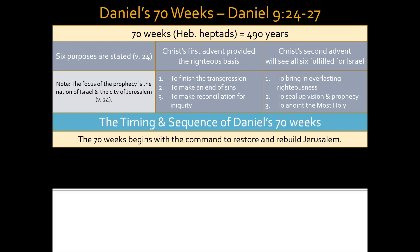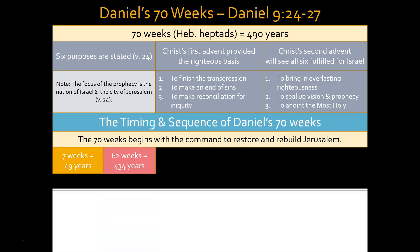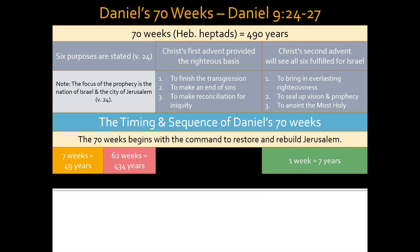We believe the 70 weeks begins with a command to restore and rebuild Jerusalem. Verse 25 says: 'Know therefore and understand that from the going forth of the command to restore and build Jerusalem until Messiah the Prince, there shall be seven weeks and 62 weeks; the street shall be built again, and the wall, even in troublesome times.' The first period is seven weeks, or 49 years, then a period of 62 weeks, or 434 years. There is then a gap, and we believe there is still outstanding one week — Daniel's 70th week — a period of seven years that has not yet been fulfilled.